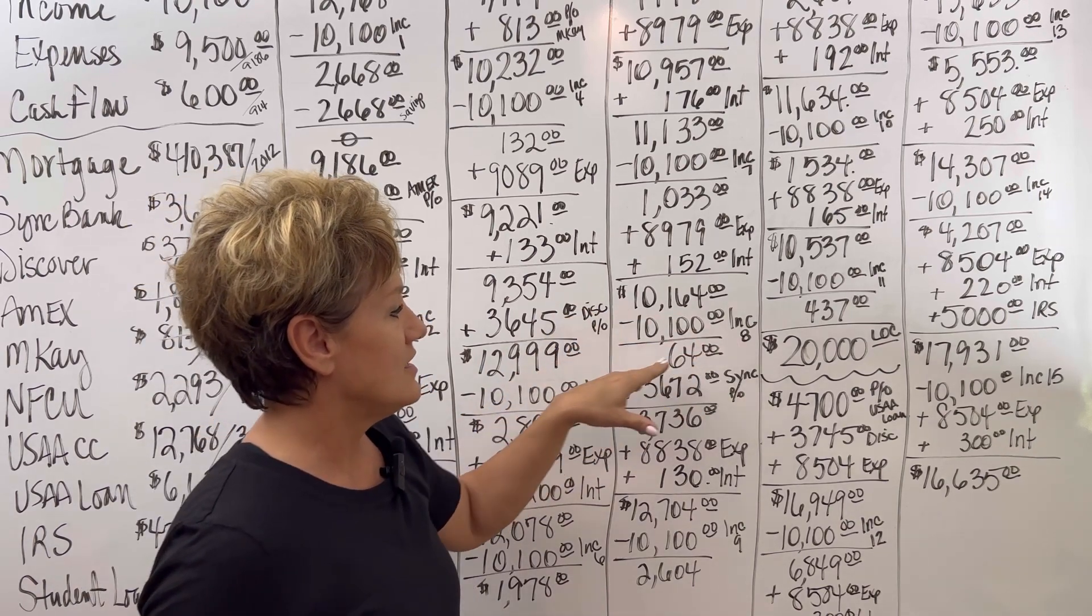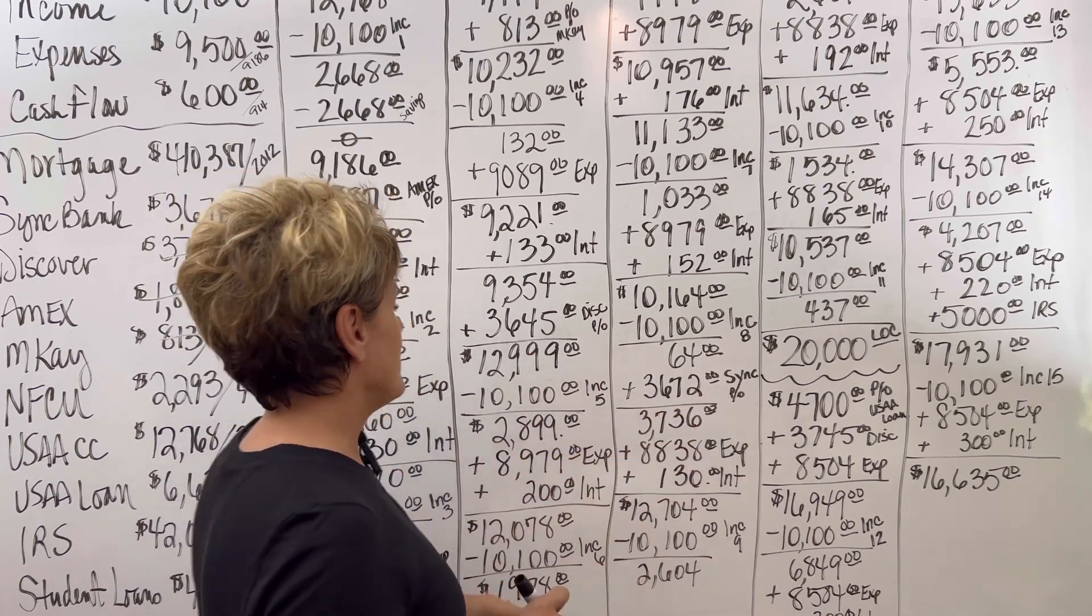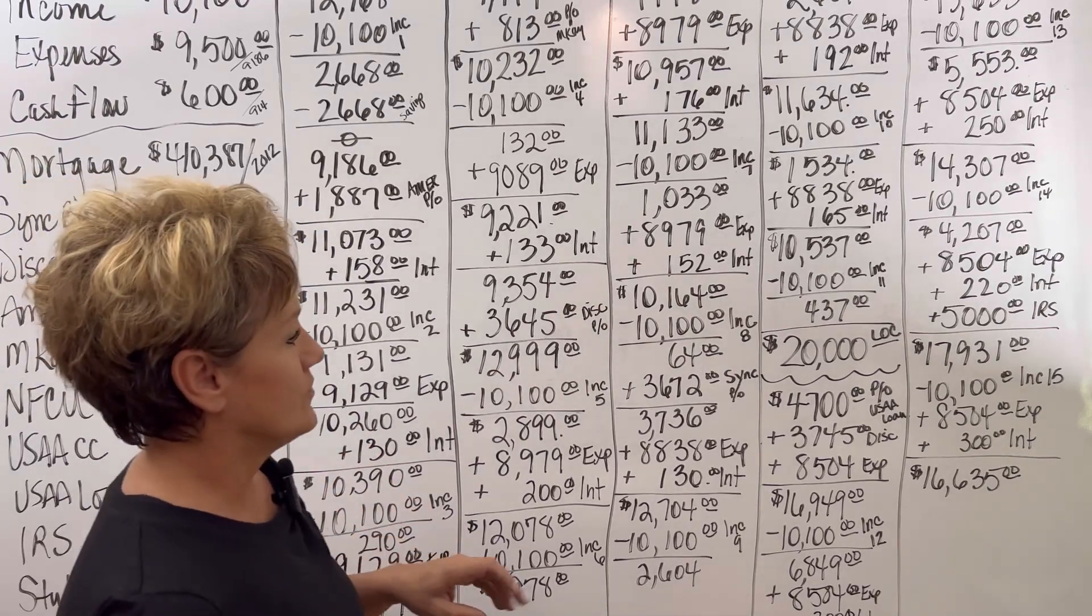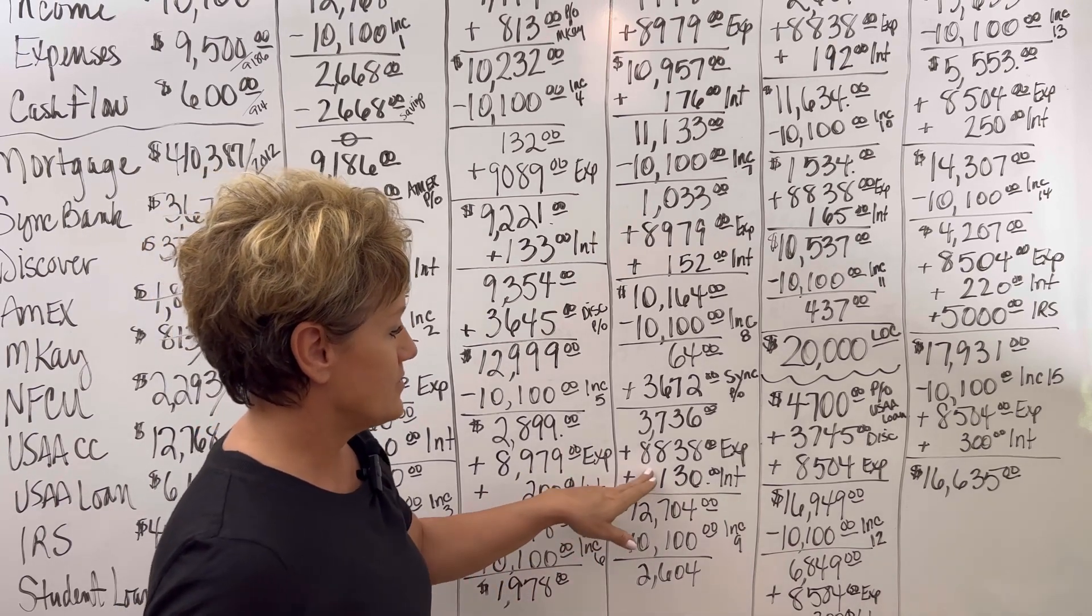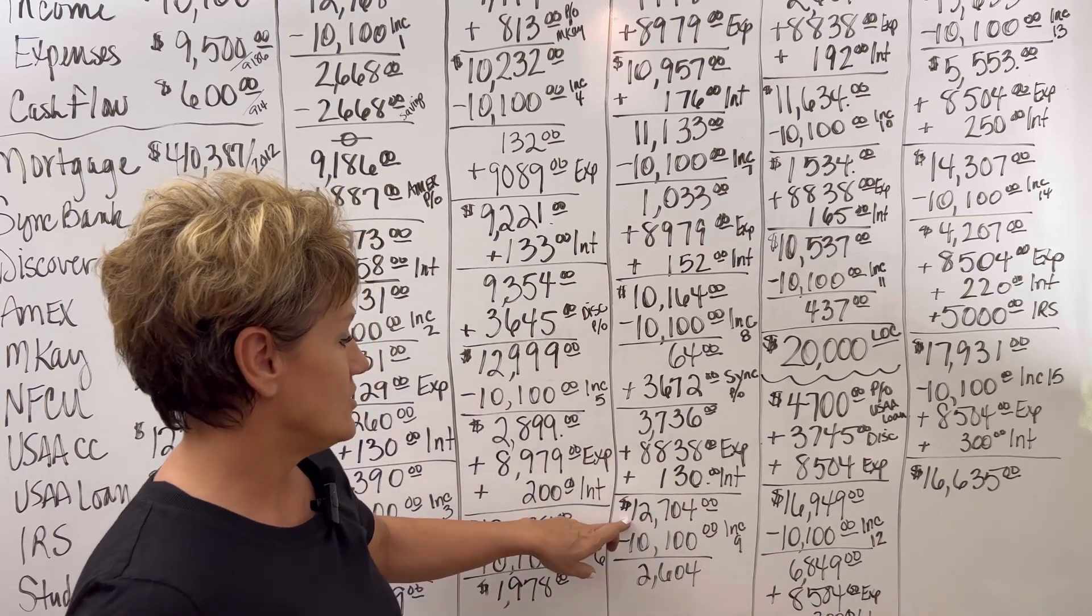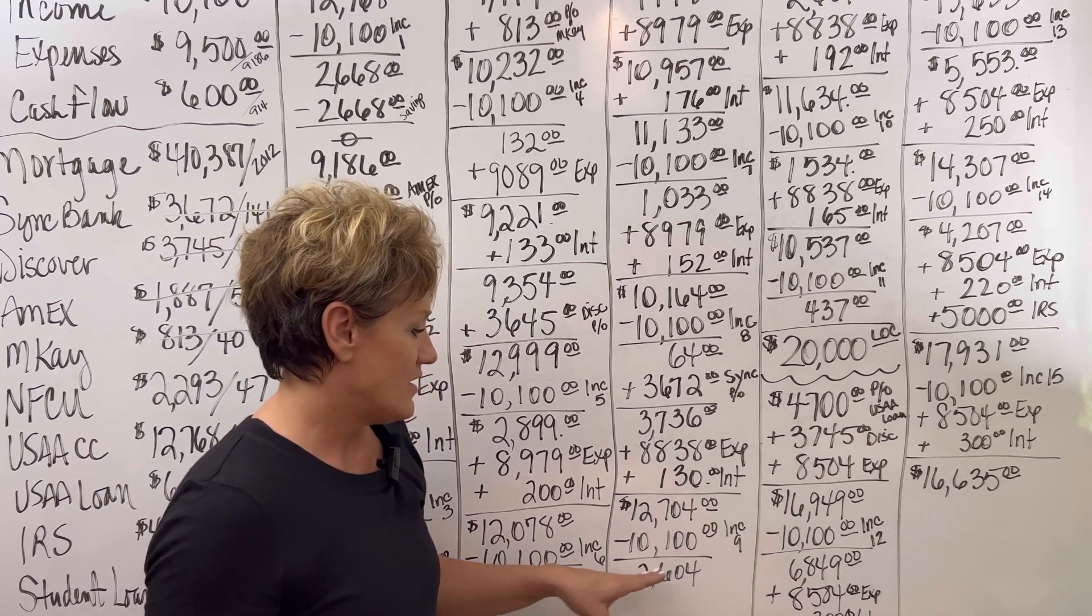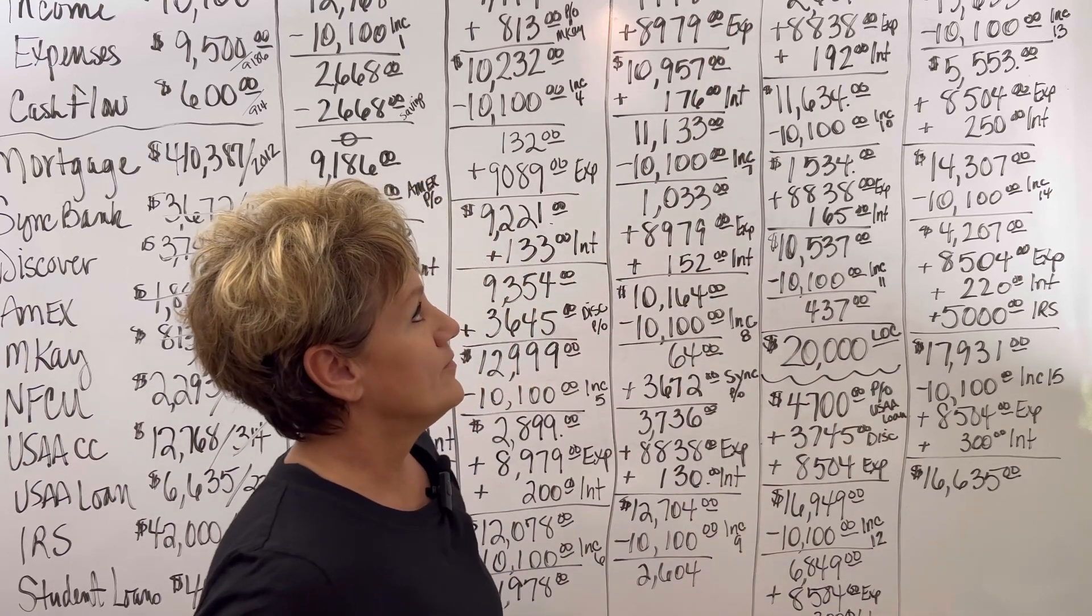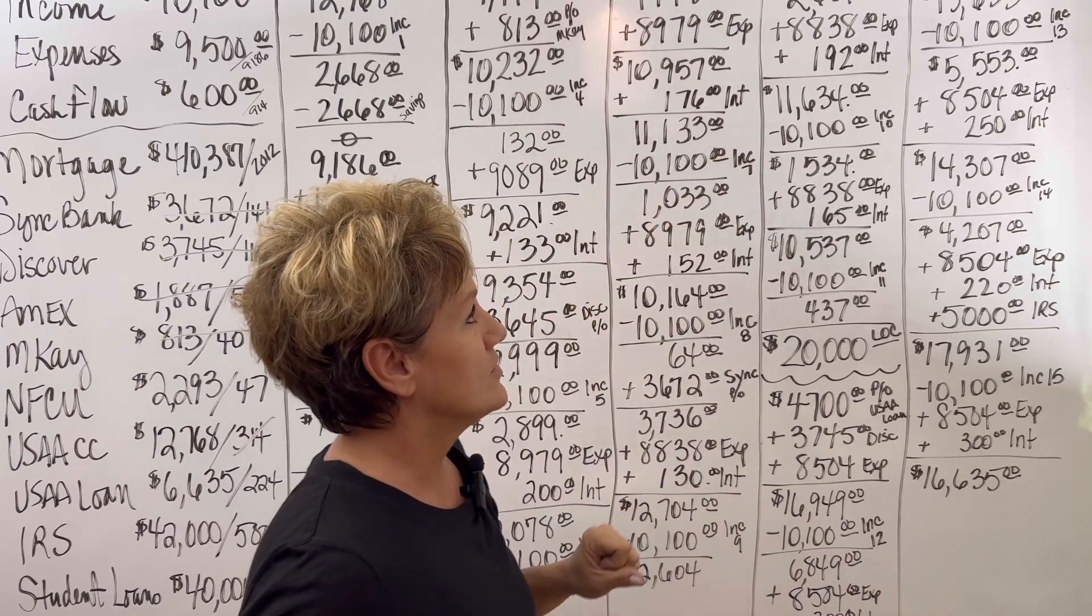Income eight goes in, bringing the balance to $64. We're going to pay off Synchrony Bank now. Cash flow of $141 now added to our cash flow, which means our expenses are down to $8,838. The interest at $130 is charged, bringing the balance back up to $12,704. Income in month nine goes in, bringing that balance down to $2,604. The expenses and the interest will come back out through the month, bringing the balance back up to $11,634.